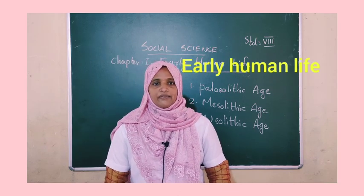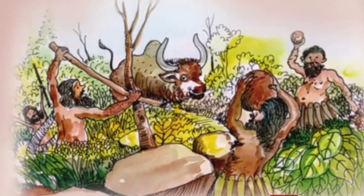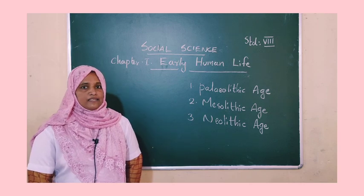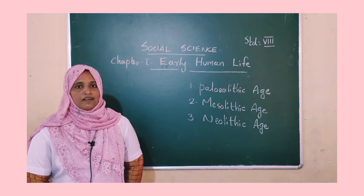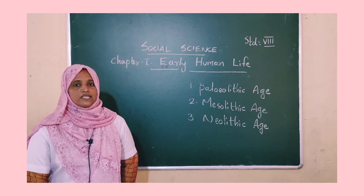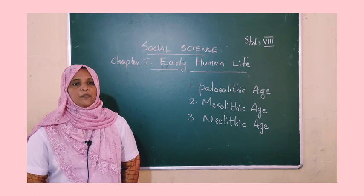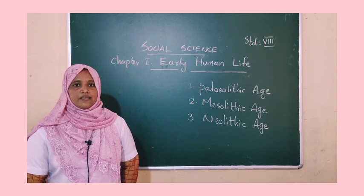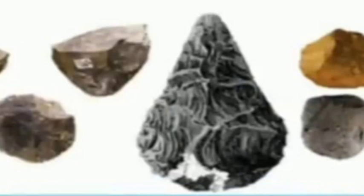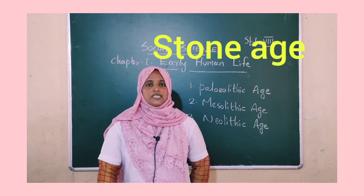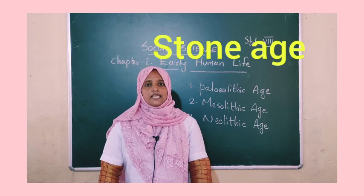Look at the figure. What does it indicate? Can you describe the picture? It shows wild animals attacking humans. Human beings used stones and branches of trees to protect themselves. Man used stones as weapons, and this period is known as the stone age.